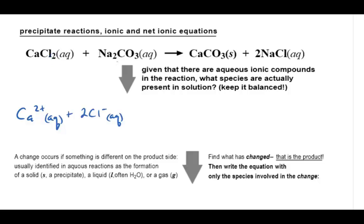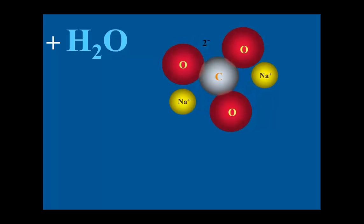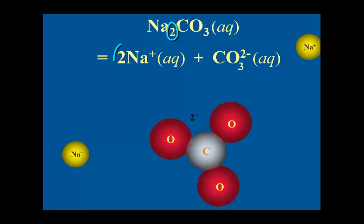For the sodium carbonate compound, there are two sodium ions and one carbonate ion. However, when dissolved in water, the result is two aqueous sodium ions and one aqueous carbonate ion.